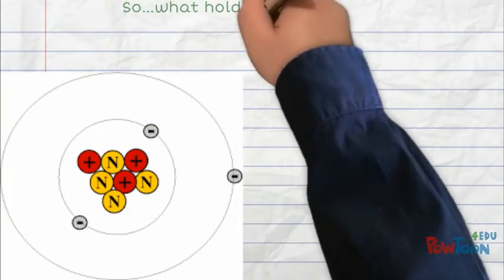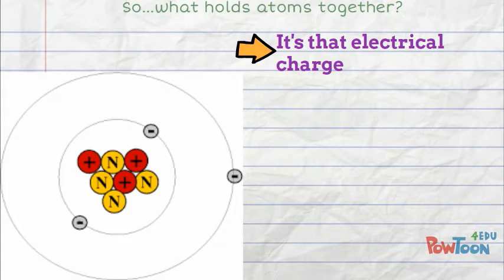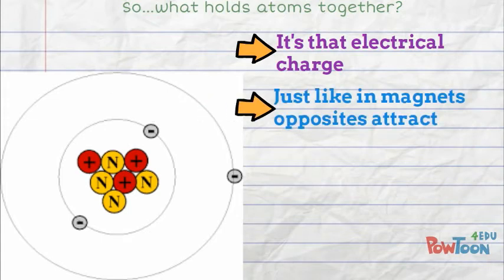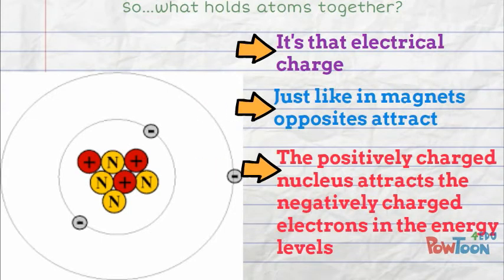So what holds atoms together? It's that electrical charge. Just like in magnets, opposites attract. The positively charged nucleus attracts the negatively charged electrons in the energy levels.